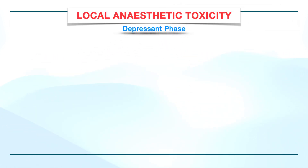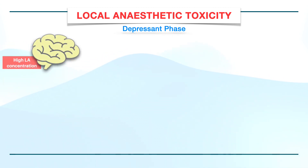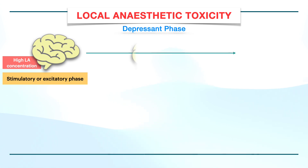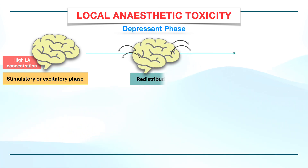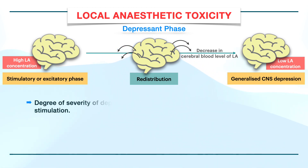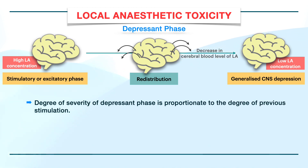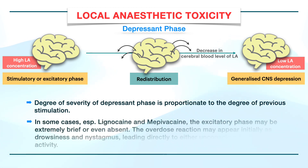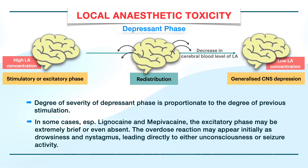I have talked about a depressant phase that manifests at the end of moderate and severe toxicity. What happens is, with time, the level of local anesthetic in the cerebral blood starts to decline due to redistribution and metabolism. As a result, the stimulatory or excitatory phase is replaced by a period of generalized CNS depression — this is called the depressant phase. The degree of severity of the depressant phase is proportionate to the degree of previous stimulation. However, in some cases, especially with lignocaine and mepivacaine, the excitatory phase may be extremely brief or even absent, and the overdose reaction may appear initially as drowsiness and nystagmus, leading directly to either unconsciousness or seizure activity.